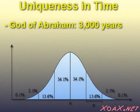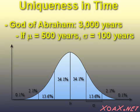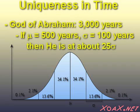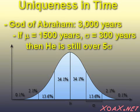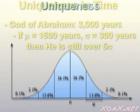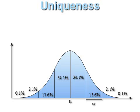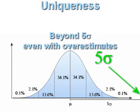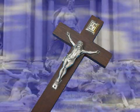We can look at this in terms of time, too. The god of Abraham has been worshipped for around 3,000 years or more, and is likely to go on for much longer. So if we take a mean of 500 years and a standard deviation of 100 years, that leaves us at roughly 25 sigma above the mean. Even if we assume 1,500 years for the mean and 300 years for the standard deviation, we are still above the 5 sigma level. This does indicate that even with extremely large and obvious overestimates, we are still beyond the 5 sigma level. So the god of Abraham is unique among all gods, and that is a qualitative scientific assessment.